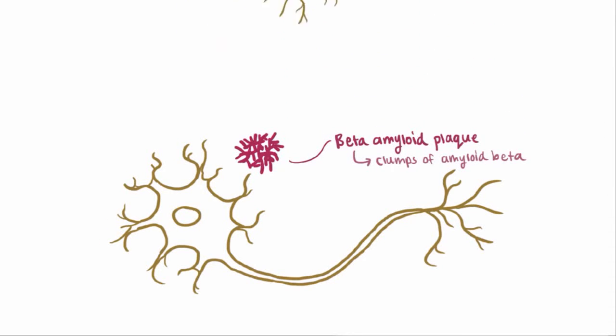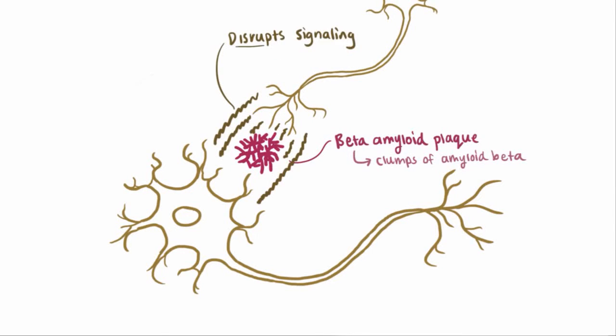These plaques can potentially get between the neurons, which can get in the way of neuron-to-neuron signaling. If the brain cells can't signal and relay information, then brain functions like memory can be seriously impaired.